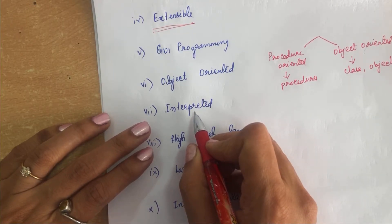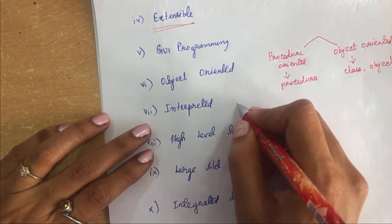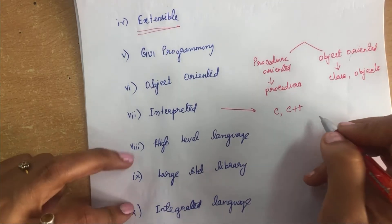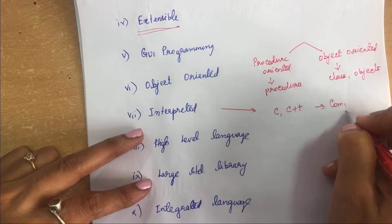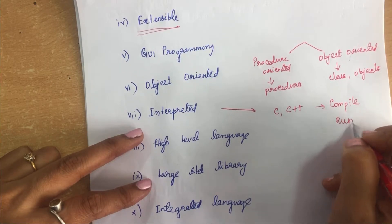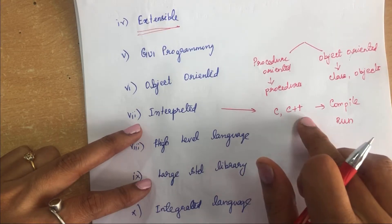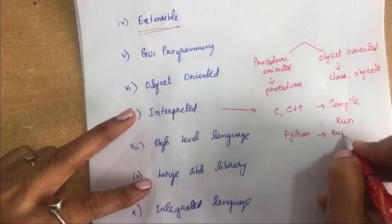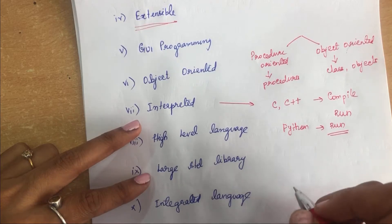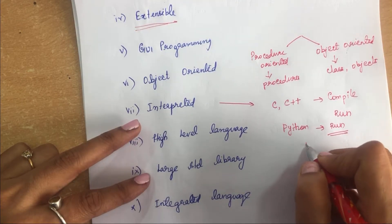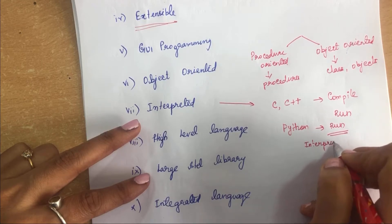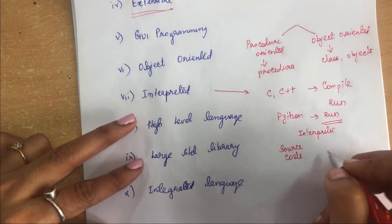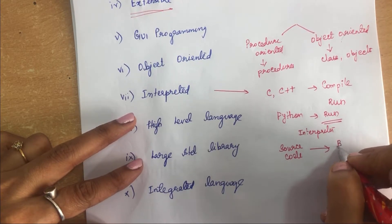Next comes interpreted. Python is an interpreted language. In C and C++, you cannot run your program directly — you need to compile first and then run. But in Python, you can execute the program directly. Inside Python, there is an interpreter. The source code you write is converted into byte code internally.